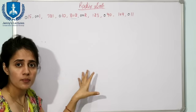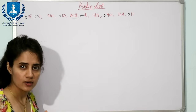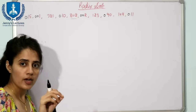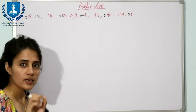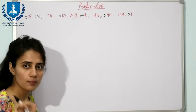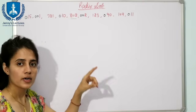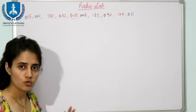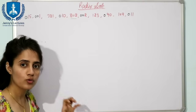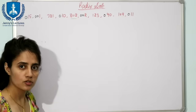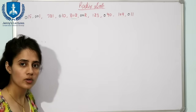Radix means basically the base. Since we are dealing with decimal numbers, the base is 10. That is why we are going to take 10 buckets. This is also known as bucket sorting. We take 10 buckets ranging from 0 to 9.